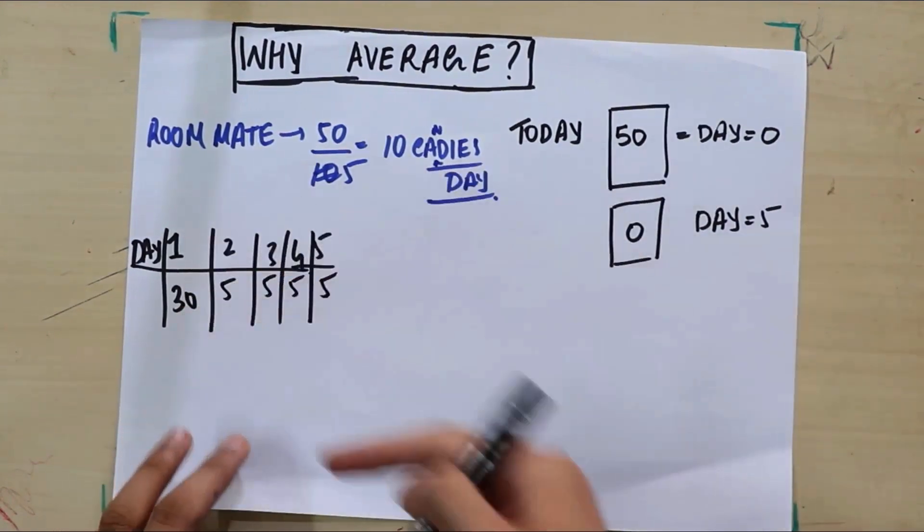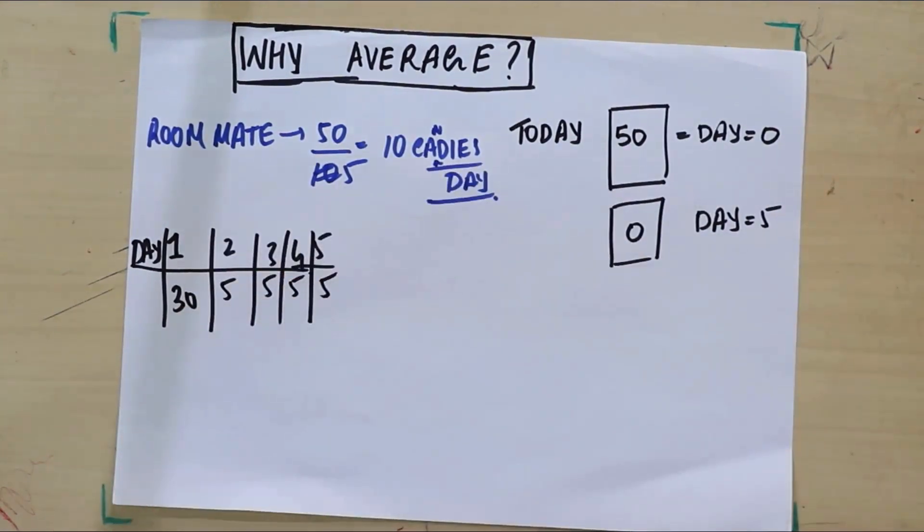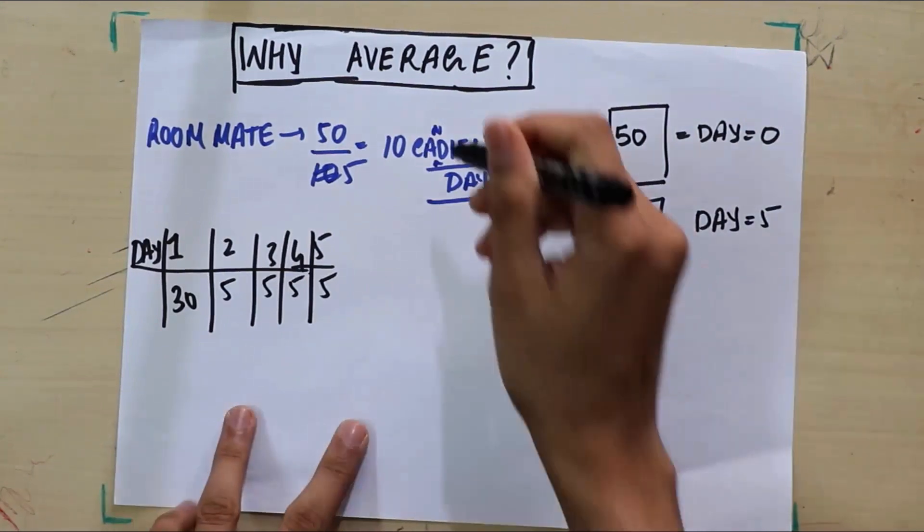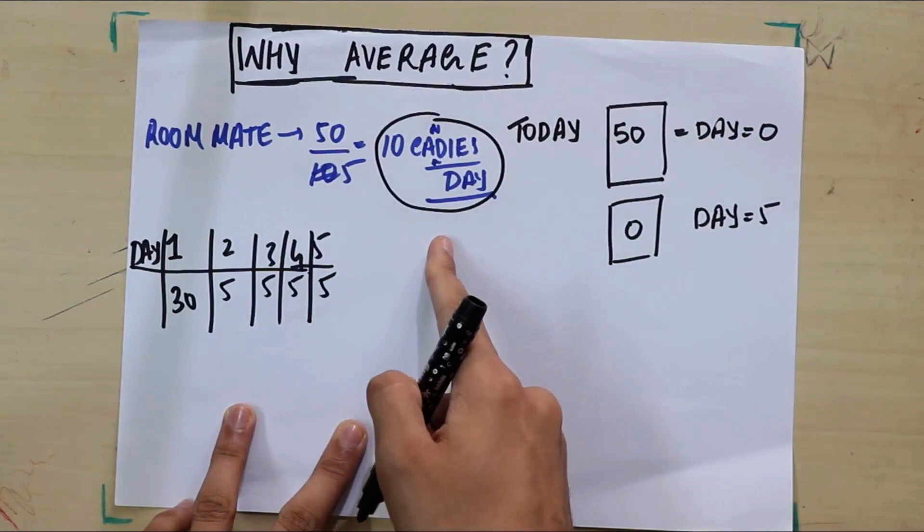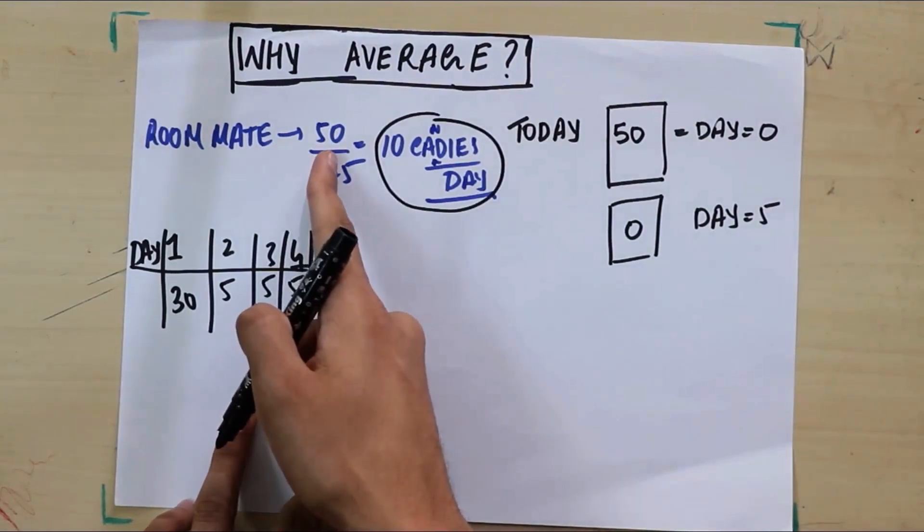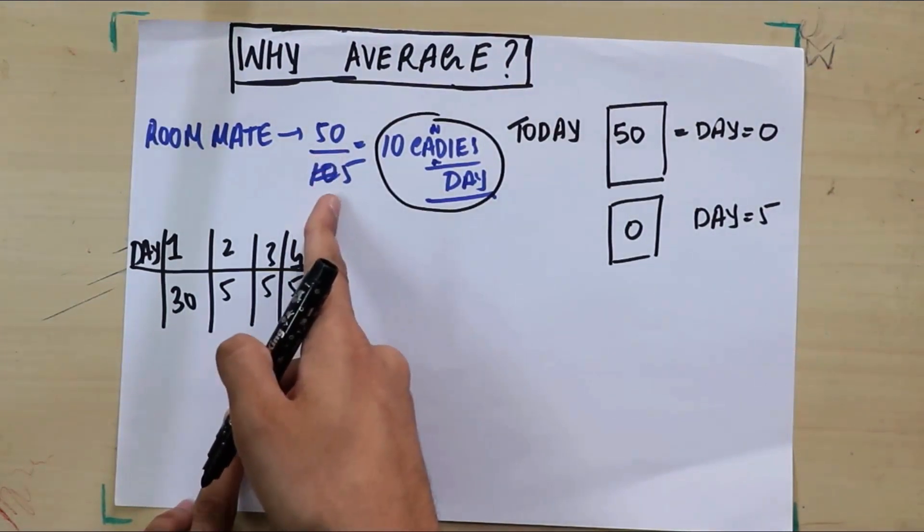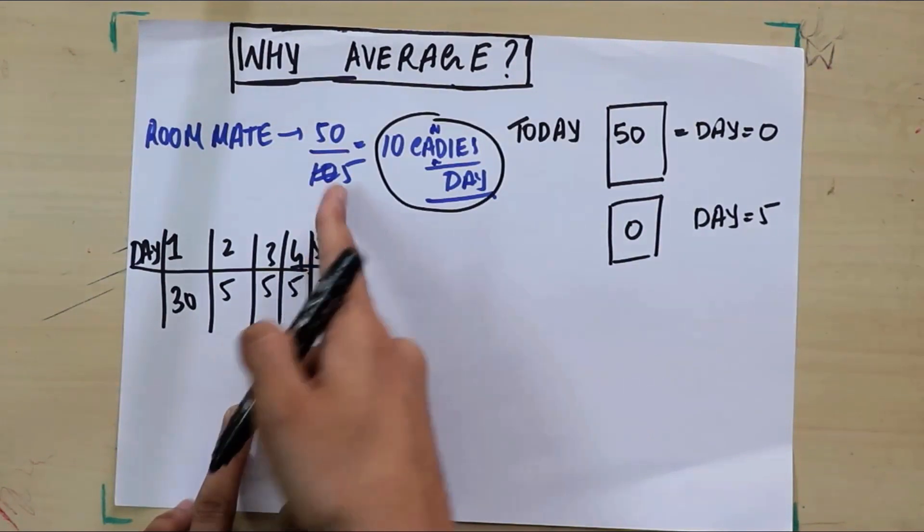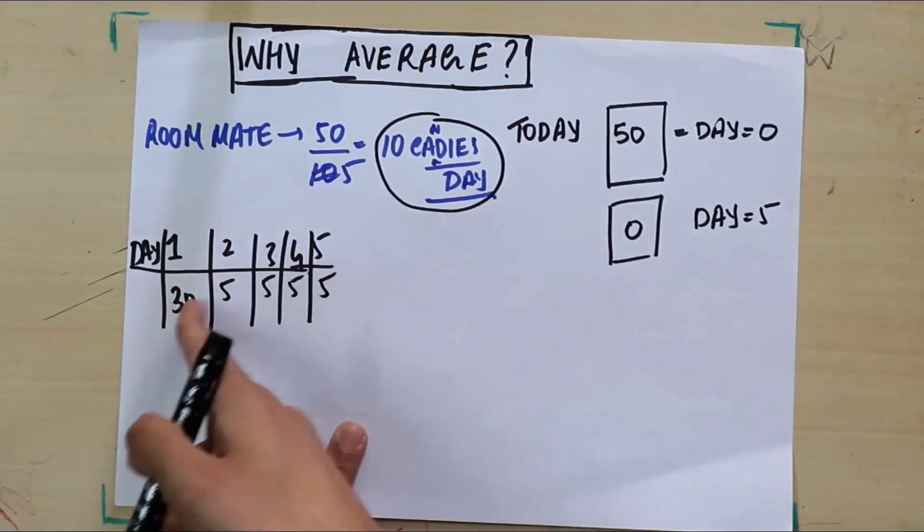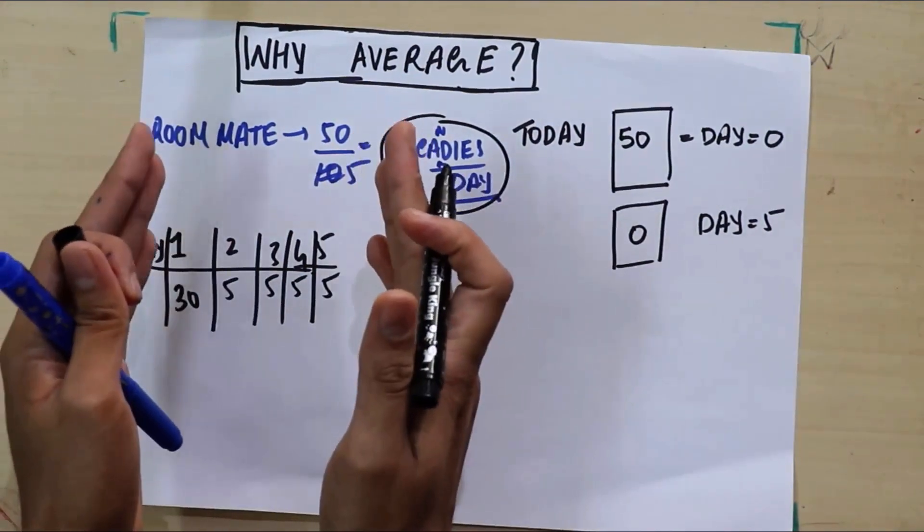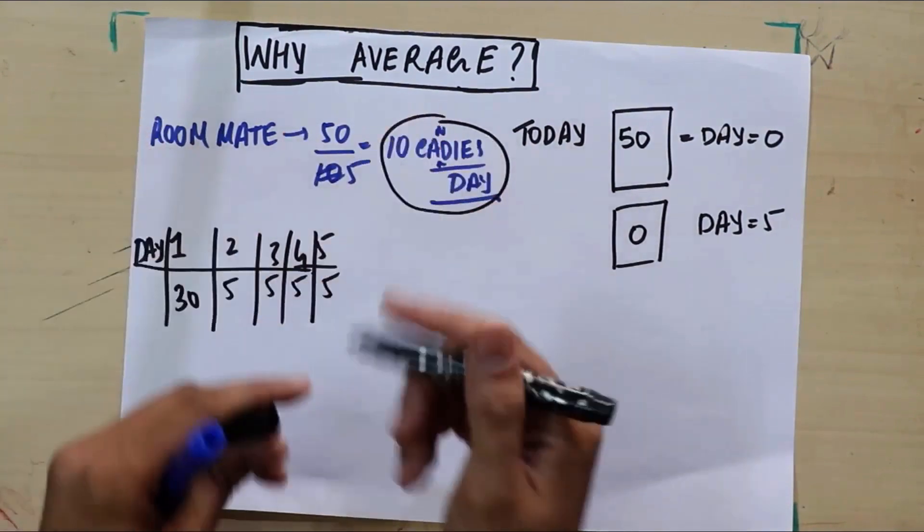So think about it: what does this number represent? How did we get this number? We just found out how many total candies he ate divided by how much total time he took to eat those candies. That's what we saw. We did not see the details that happened in between. We just looked at the whole five days, the situation over the whole five days.